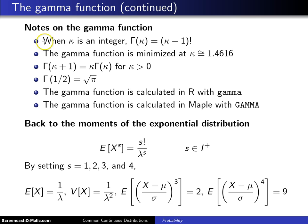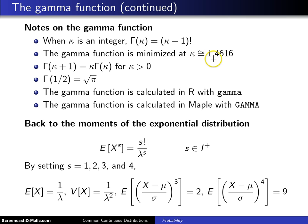And here they are. First of all, as noted earlier, when kappa is an integer, gamma of kappa is kappa minus 1 factorial. The gamma function is minimized at kappa of approximately 1.4616.